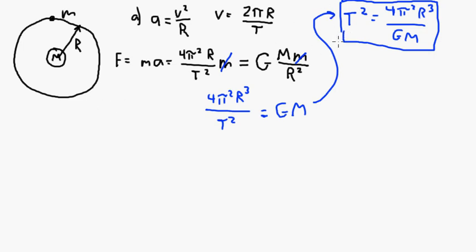Part B asks us to find the speed of the orbiting body. So V is 2πR over T. Probably the easiest way to do that is just say MA equals MV² over R, and this is the force here again, F equals MA, and that is going to equal G big M little M over big R².